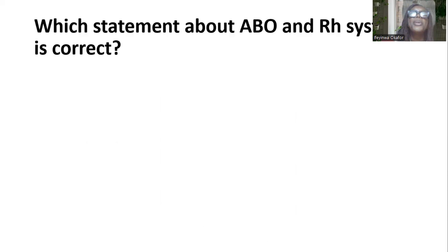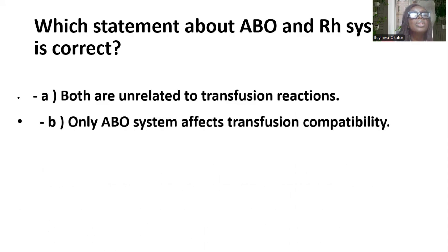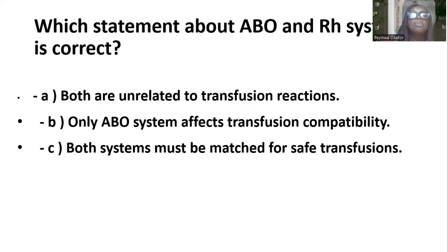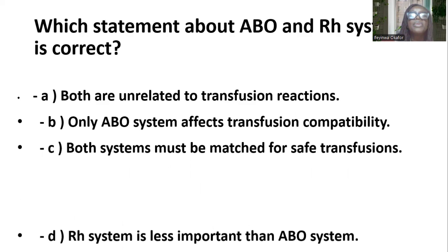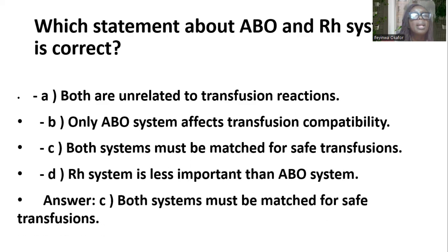Which statement about the ABO and RH systems is correct? Options include: both are unrelated to transfusion reactions; only the ABO system affects transfusion compatibility; both systems must be matched for safe transfusion; the RH system is less important than the ABO system. And the answer is C — both systems must be matched for safe transfusion.